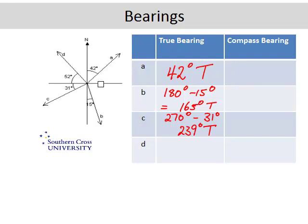And with D, the true bearing is all the way around to here. And you can see we've come around 90, 180, 270, and it's 52 degrees past 270, so it'll be 270 degrees plus 52 degrees, which is 322 degrees true bearing.